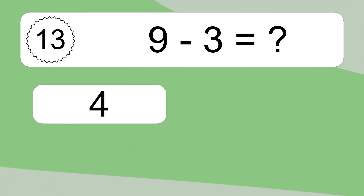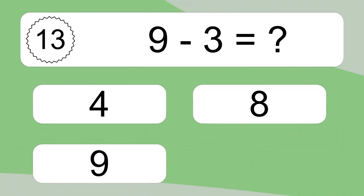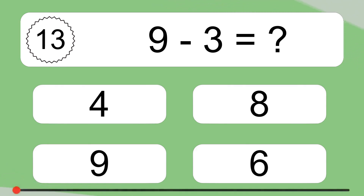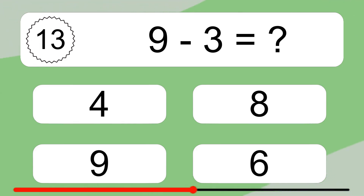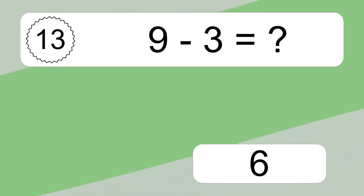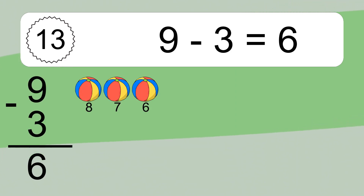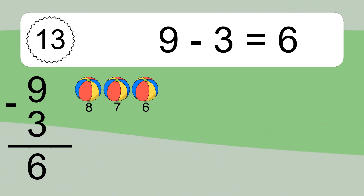9 minus 3 equals what? 9 minus 3 equals 6. Let's count it. 8, 7, 6.